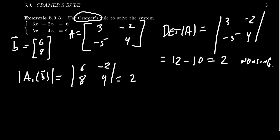It's a 2×2 determinant, so we get 6 times 4, which is 24, and then -2 times 8, which is -16 — but we're subtracting it, so it becomes a positive 16. That adds up to 40. Now we compute det(A₂(b)).